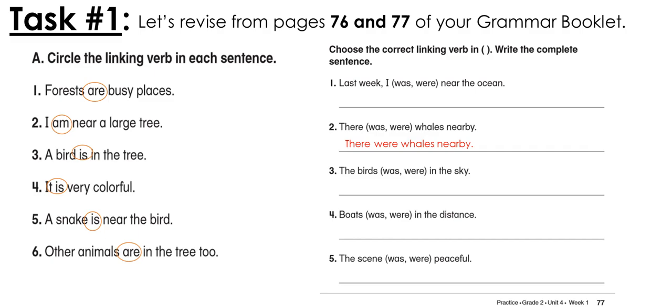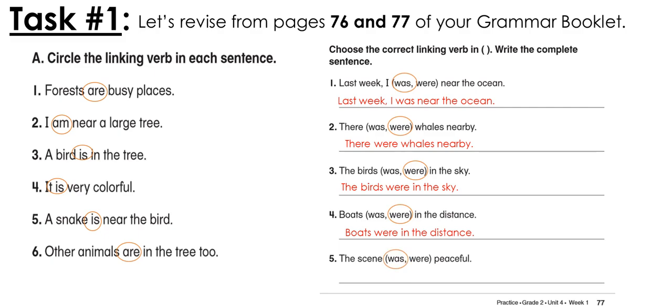It is very colorful. A snake is near the bird. Other animals are in the tree too. For the next exercise, choose the correct linking verb in the brackets and write the complete sentence. The linking verb here is 'was' because it's talking about I last week: 'I was near the ocean.' There were whales nearby. The birds were in the sky. Boats were in the distance. The scene was peaceful.